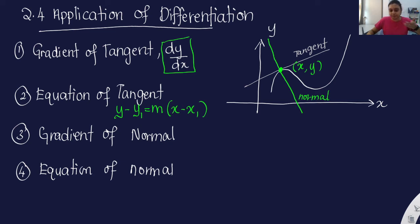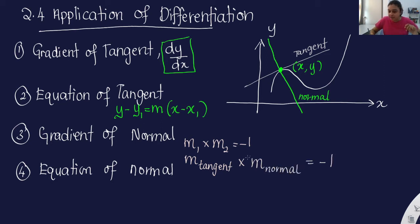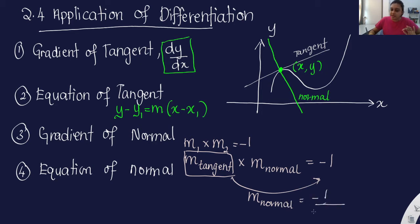How do I find gradient of normal? Normal means perpendicular, and if you remember Form 4, perpendicular means m1 times m2 equals negative 1. So let's say m1 is the gradient of tangent — you multiply it with the gradient of normal and you should get negative 1. So to find the gradient of normal, you move it to the right hand side: gradient of normal equals negative 1 divided by the gradient of tangent.